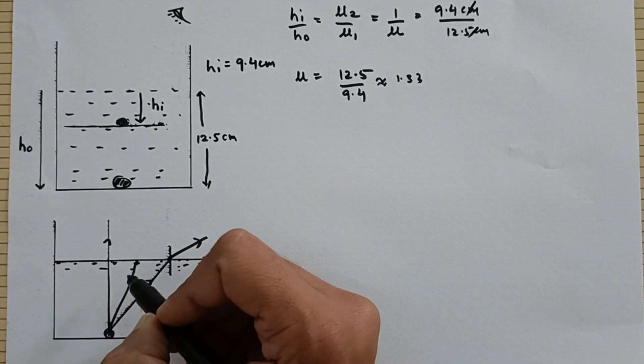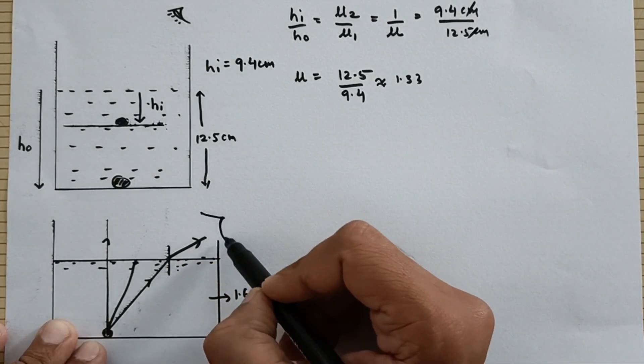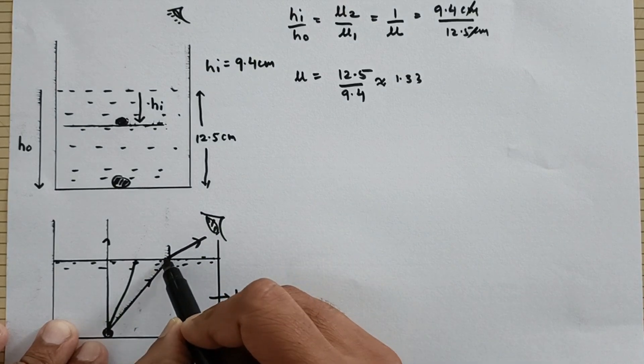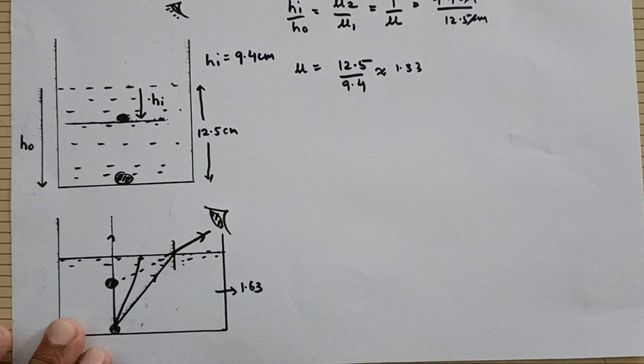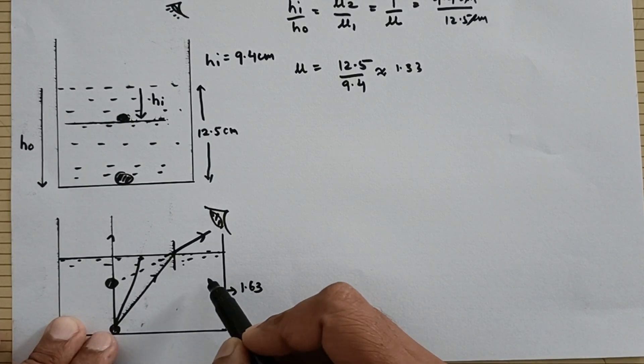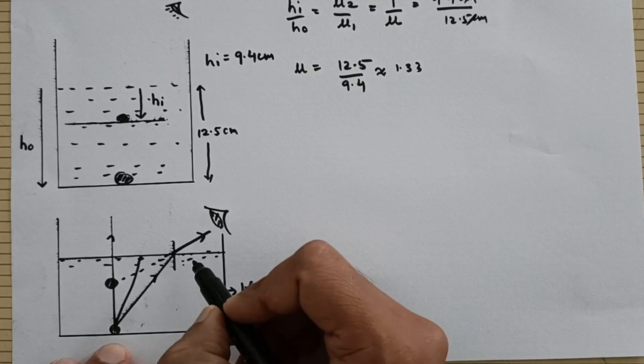The ray which is going out now your eye will receive this ray and it will see the image to be somewhere over here. Now this is in case of water.